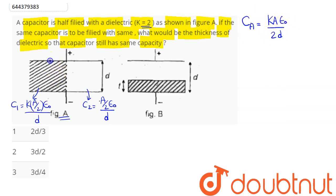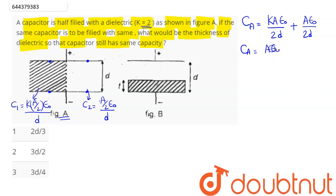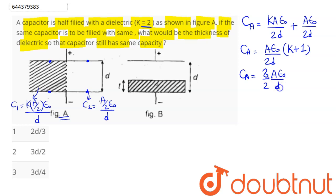In case 1, the equivalent capacitance Ca comes out to be k·A·ε₀/2d plus A·ε₀/2d. These two capacitors are in parallel as they are connected across the same potential difference, so capacitance is simply their sum. Taking out A·ε₀/2d as common, the result comes out to be (A·ε₀/2d) times (k + 1). Now k is given as 2, so k + 1 = 3, hence Ca = 3A·ε₀/2d.